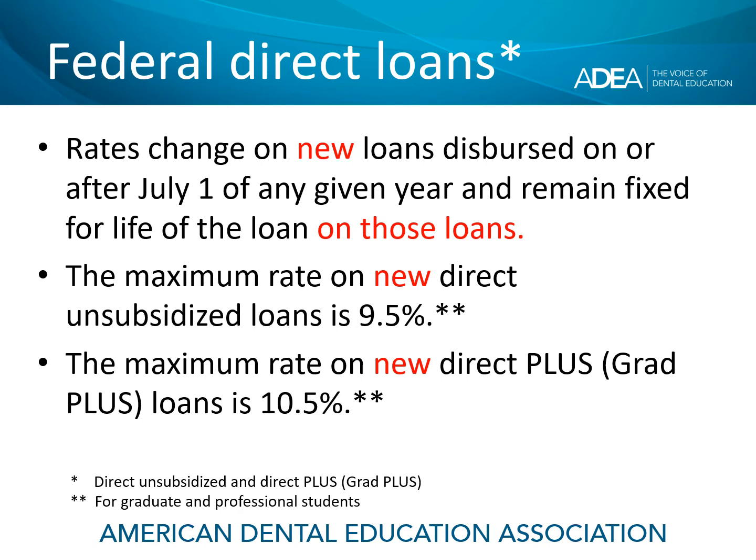On these loans, the rates change on new loans dispersed on or after July 1 of any given year, and then they remain fixed for the life of those loans. This means if you go through four years of dental school and take out four direct unsubsidized loans, depending on when those are dispersed, you could end up with four different loans with four different interest rates when you graduate.